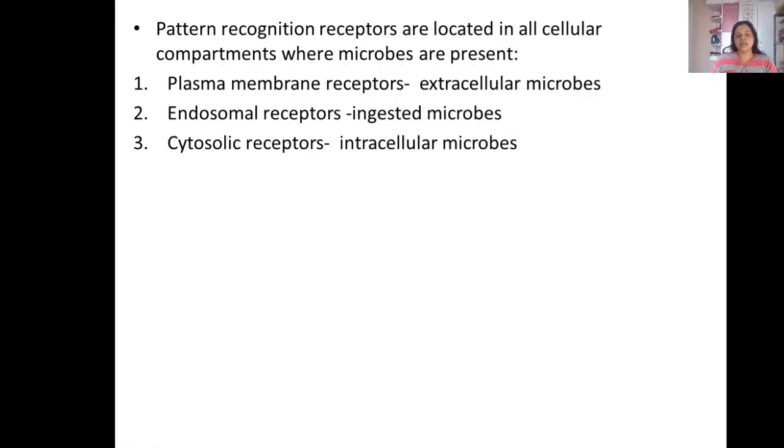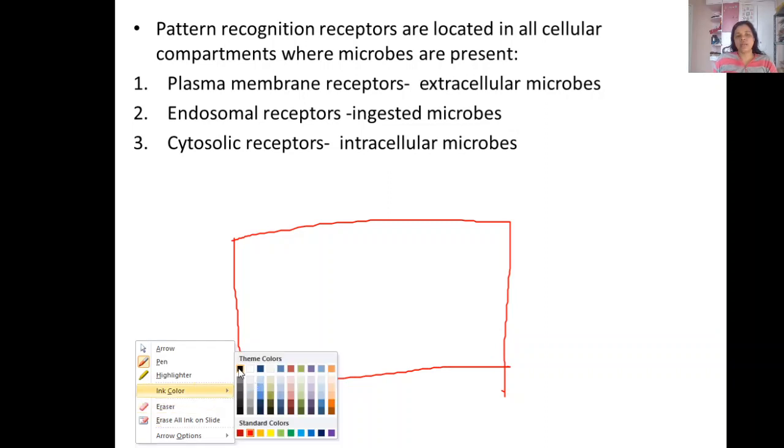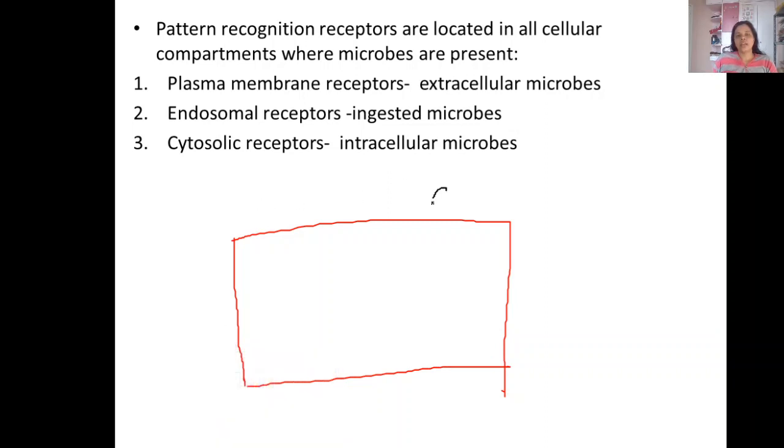These pattern recognition receptors are present where the microbes can be present. They can be present on the cell membrane. On the cell membrane, you may have the C-type lectin receptors and the toll-like receptors. These two are present on plasma membranes and they recognize the extracellular microbes.